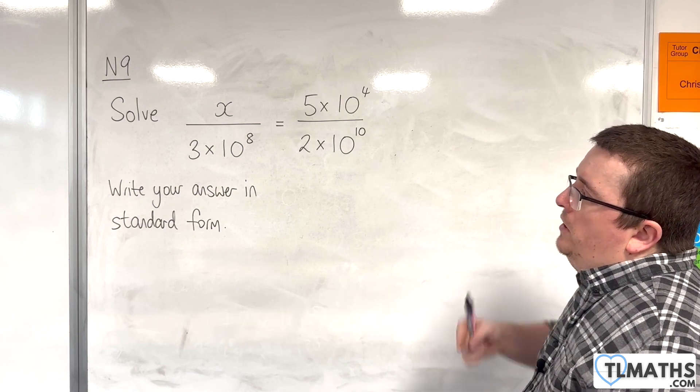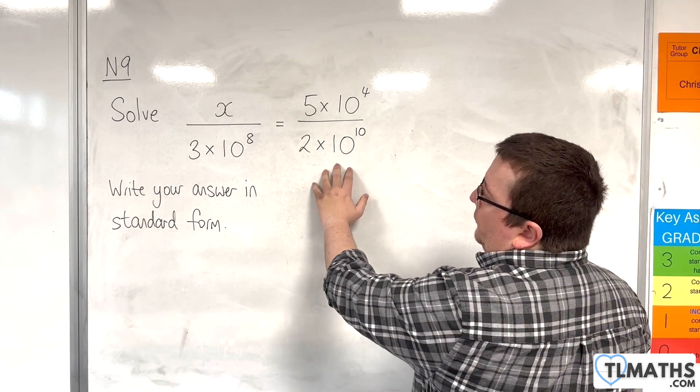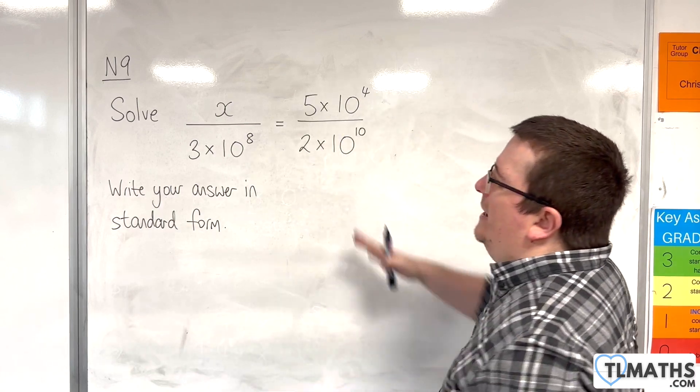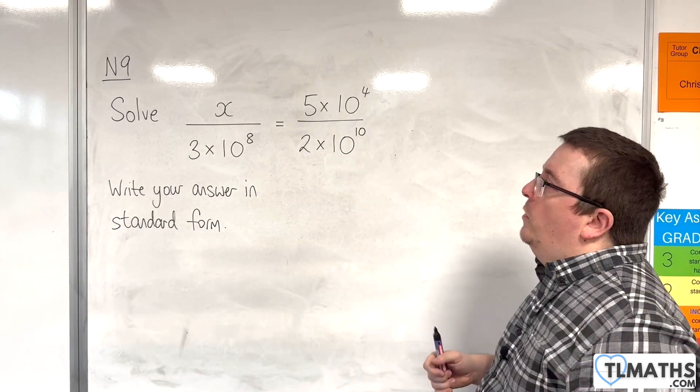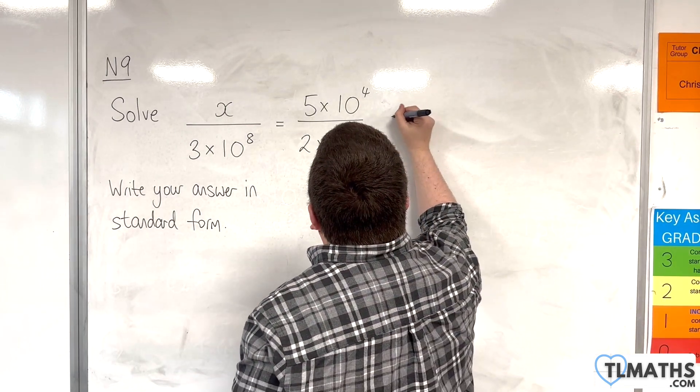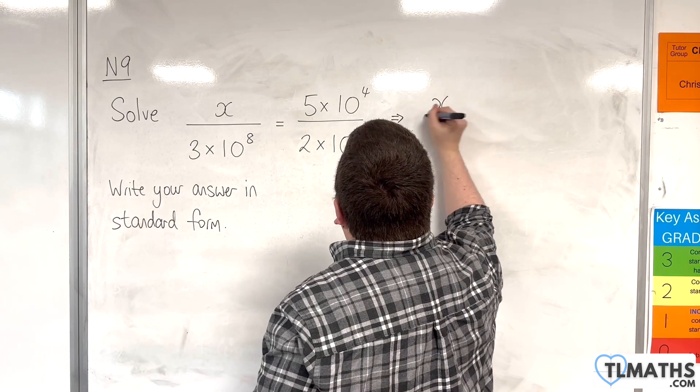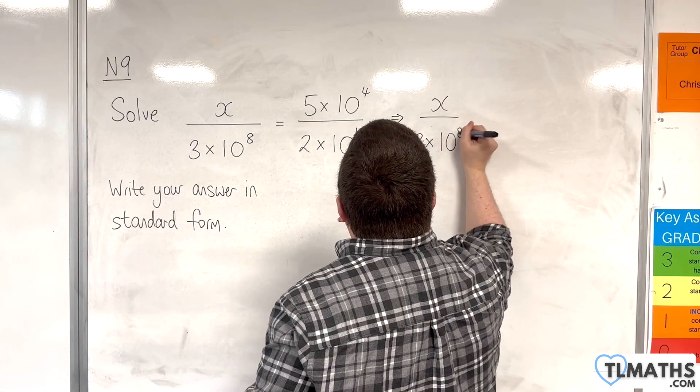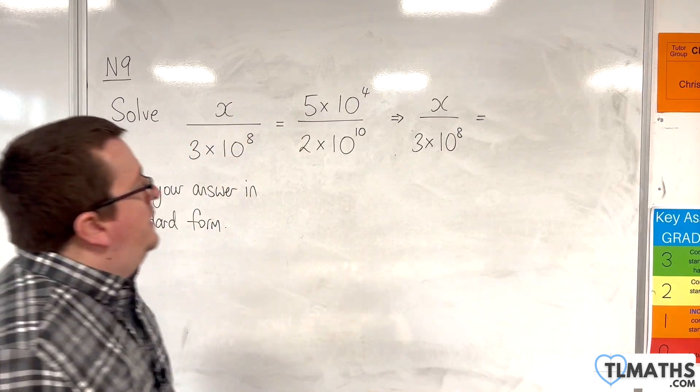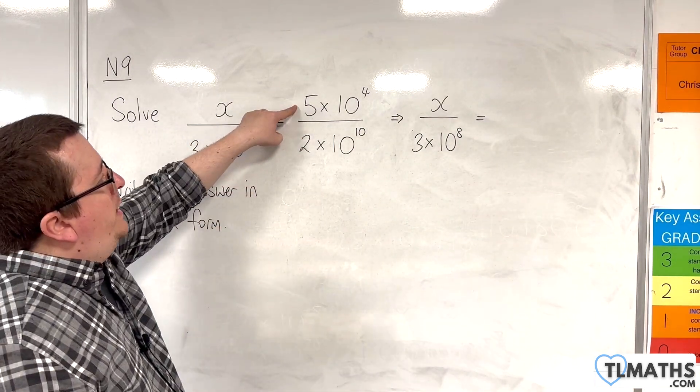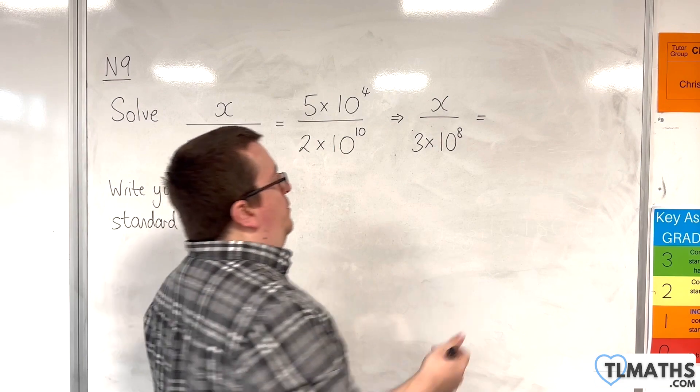I think I'm going to go with simplifying the right hand side first, because what I'm going to end up with is something that looks quite messy otherwise. So I'm going to leave the left hand side as it is. The right hand side, we have 5 divided by 2, which is 2.5.